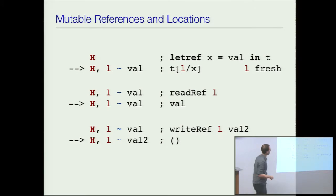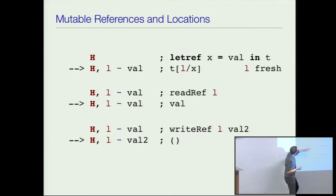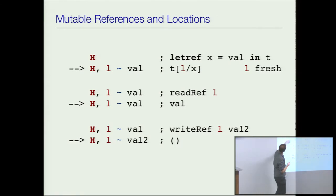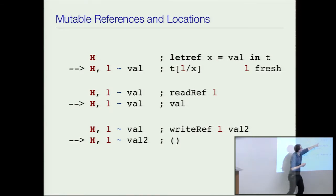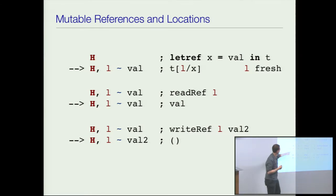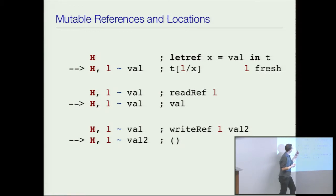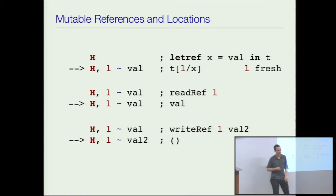So I can write down the evaluation rules for this. When I have a 'let ref' form, when it steps, I allocate a new location L and then substitute L for x in the term. Read ref just finds the location and returns the value. Write ref updates the value. Those are my evaluation rules.